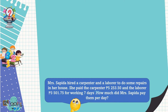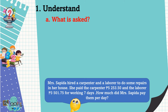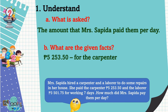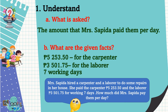First, we need to understand the problem. We should know what is asked. The problem is asking for the amount that Mrs. Sapida paid them per day. What are the given facts? The given facts are 5,253 pesos and 50 centavos for the carpenter, and 3,501 pesos and 75 centavos for the laborer.